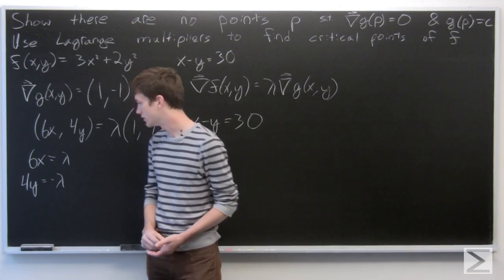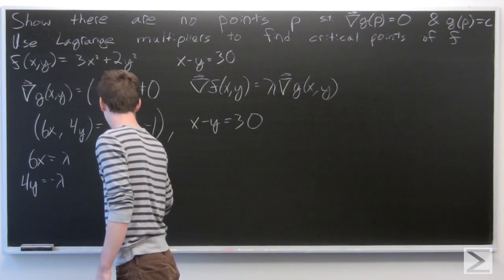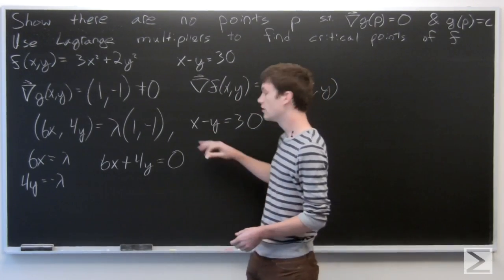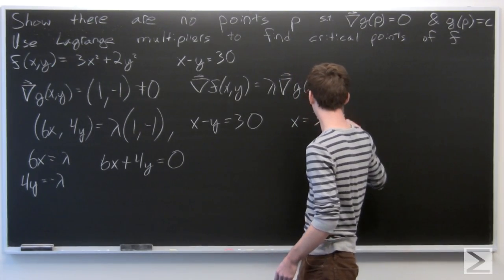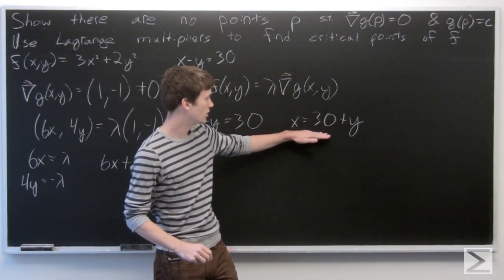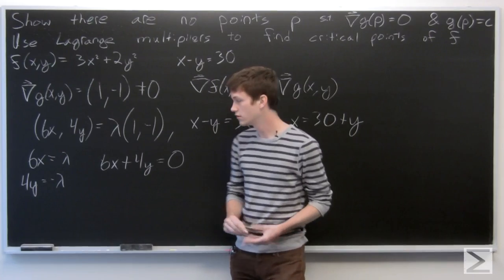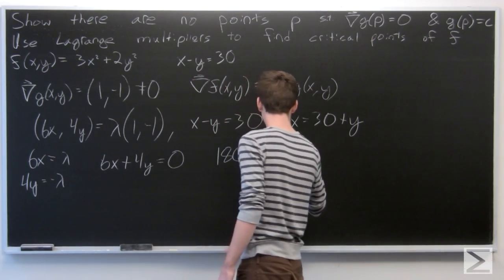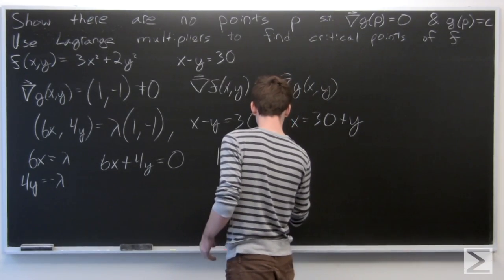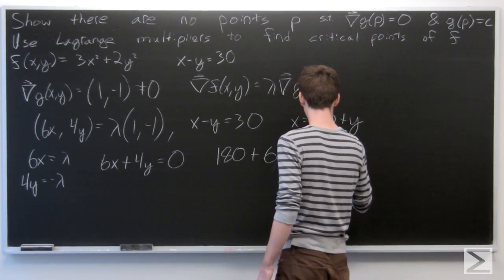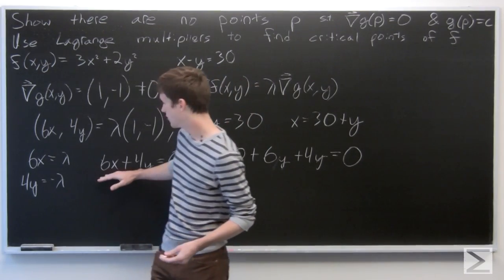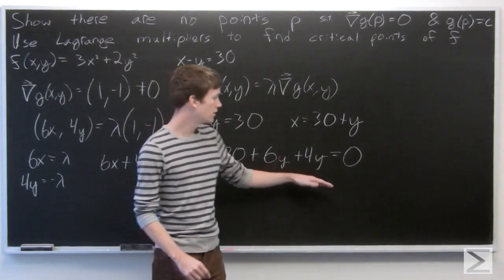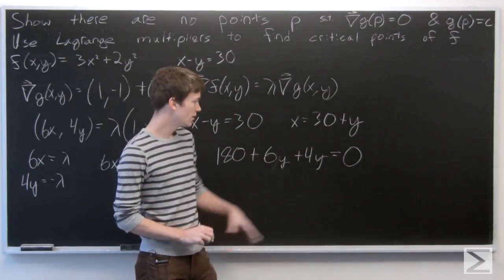We can add these two equations together, so we get 6x + 4y = 0. Now we can use our constraint — solving for x, we see that x = 30 + y. We can go ahead and plug that in, so 6 times (30 + y) gives 180 + 6y, and then we add our 4y from the equation and set that equal to 0.